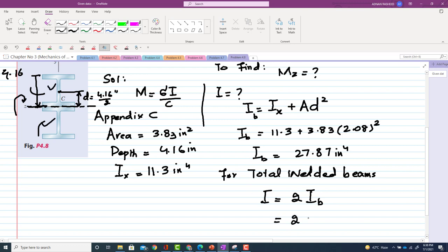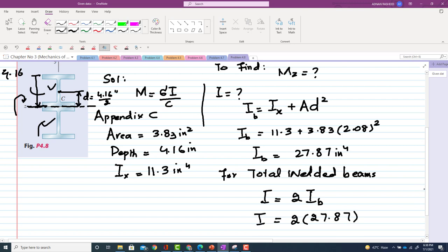So we have to multiply by 2. So 2 into 27.87 will give you I equal to 55.74 inch to the fourth.